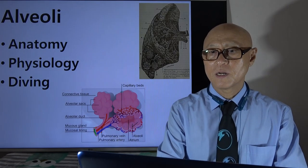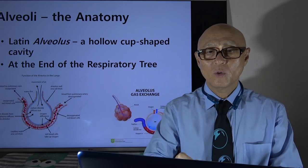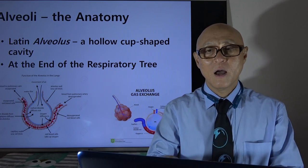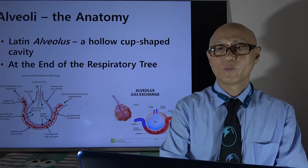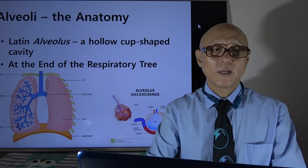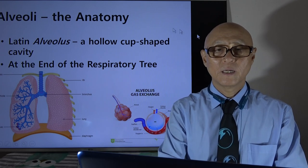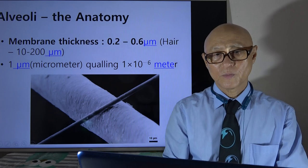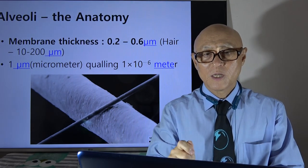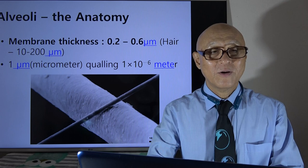Alveolus — the anatomy. Alveolus comes from the Latin word; the plural is alveoli. That's where gas exchange happens. The membrane of the alveolus has a thickness of about 0.2 to 0.6 micrometers. Our hair is like 10 to 200 micrometers — one micrometer equals 1 × 10⁻⁶ meters.